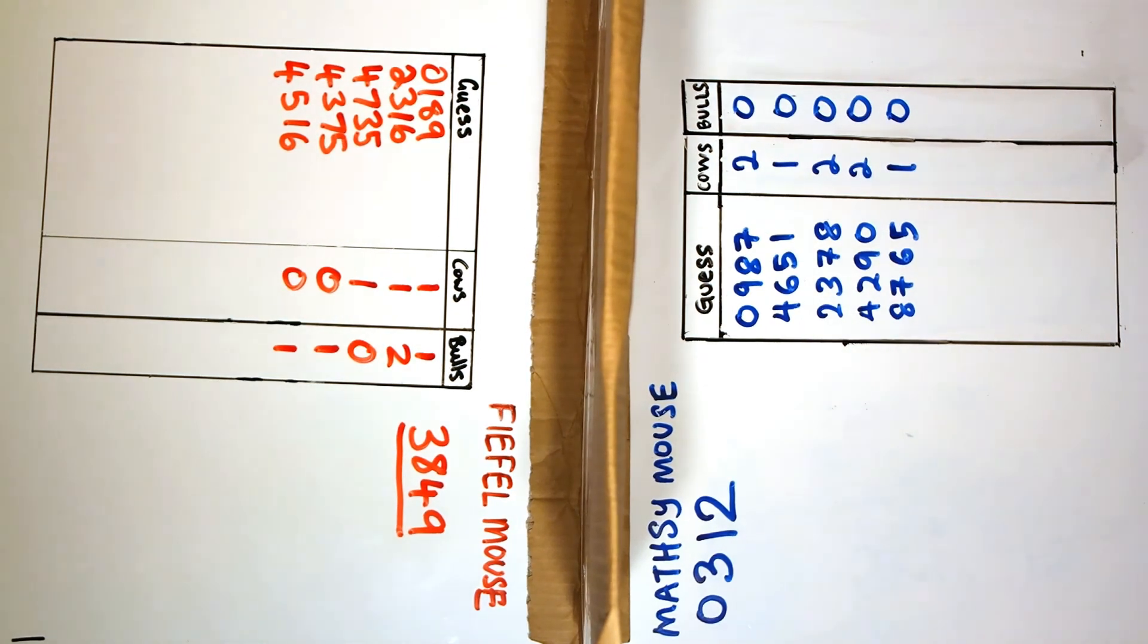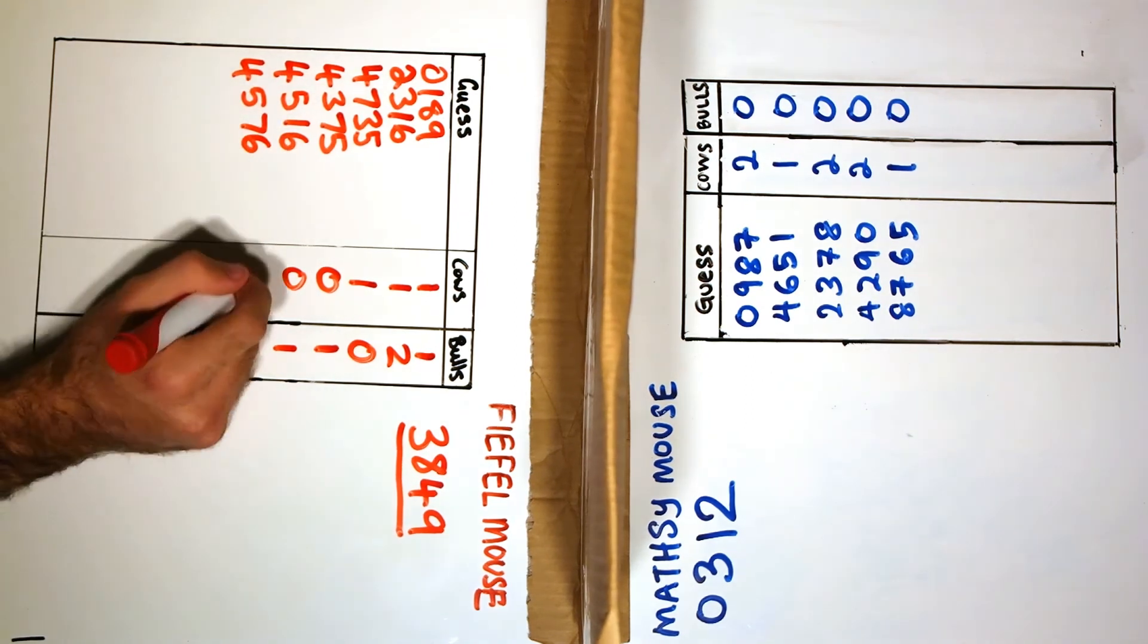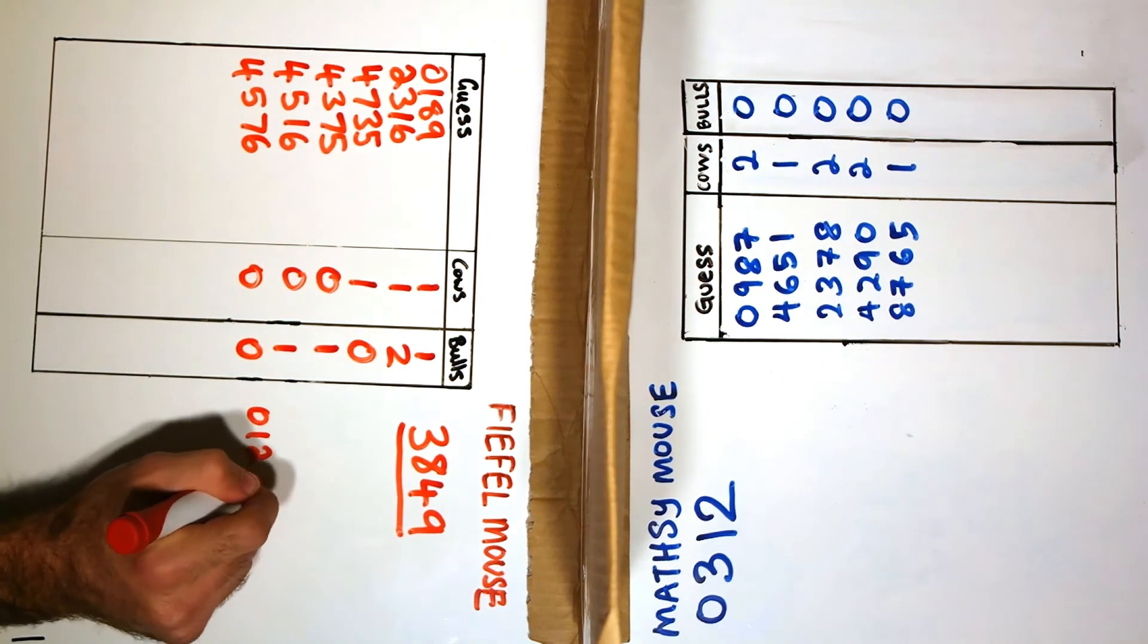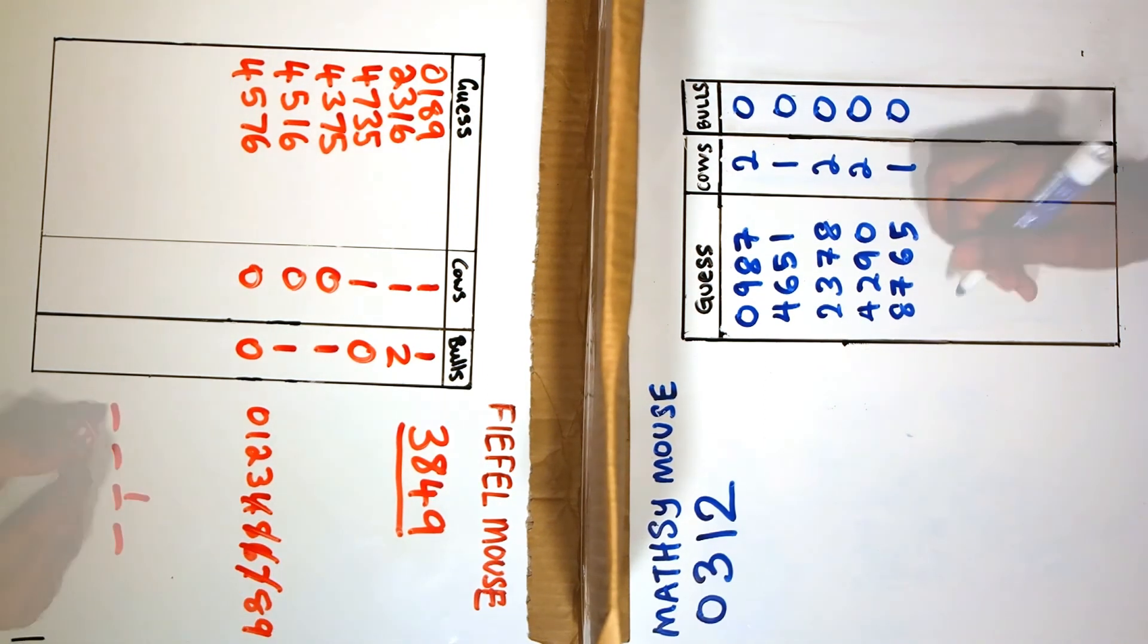One thing that is very useful is if the number you guessed has 0 cows and 0 bulls. This means that none of those numbers are in your opponent's combination and you can cross them all out and make your future guesses easier.